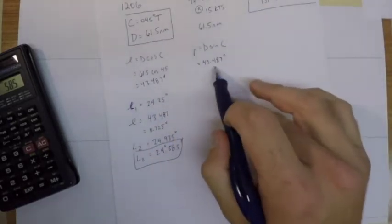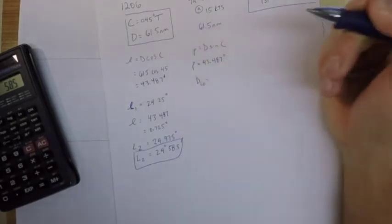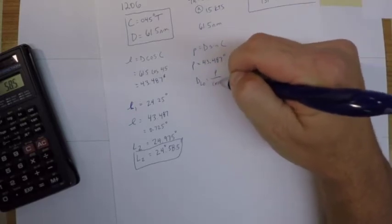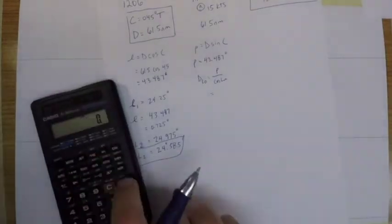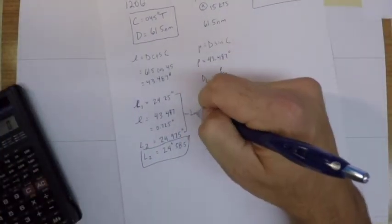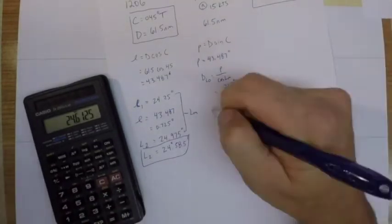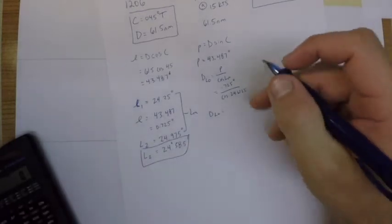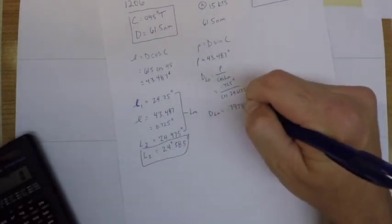Likewise for the longitude, we already determined our departure, so then we go into the difference in longitude and that is P over the cosine of the mid-latitude, which is—we need to figure out our mid-latitude. So our difference in longitude, if I do that out, is going to be 0.7975 degrees.